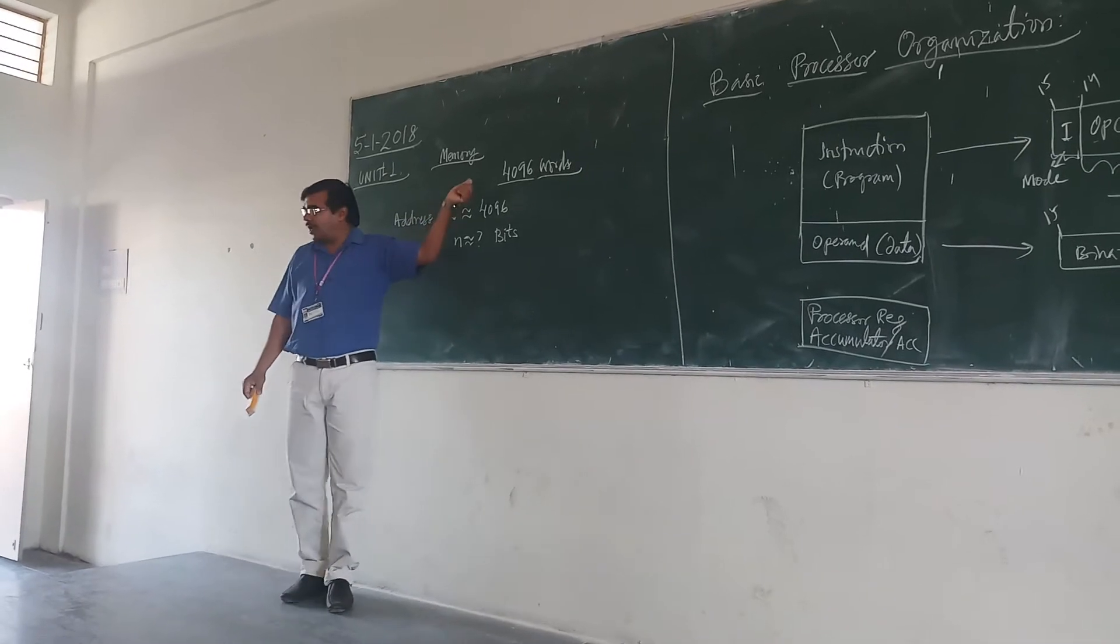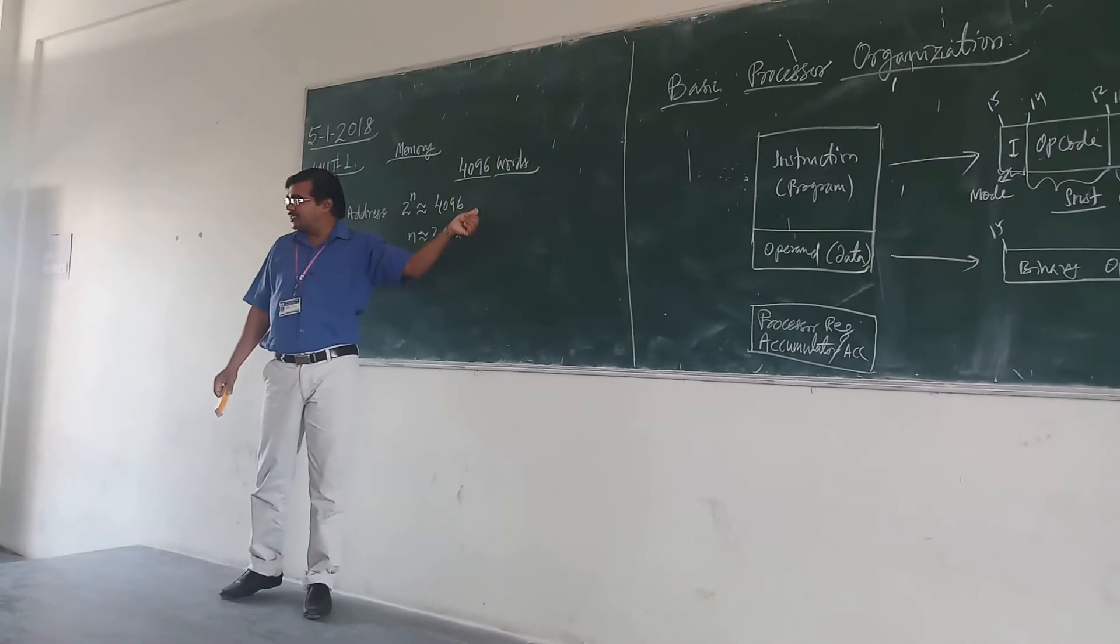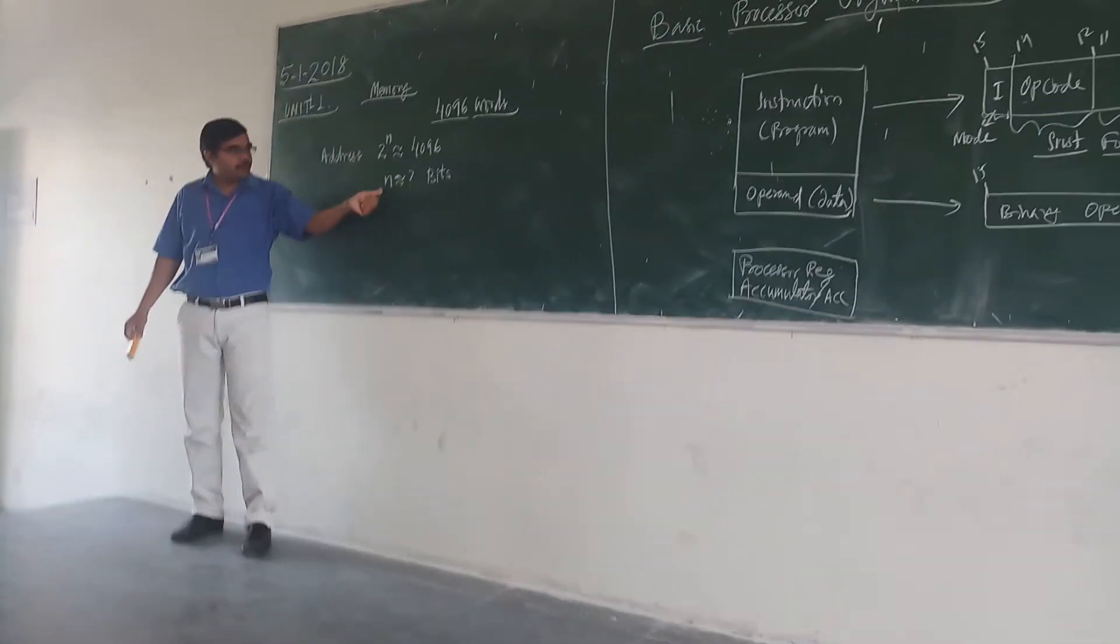We need 2 to the power n. 2 to the power n is equal to 4096. Then whatever this n will be there, that much we will say.